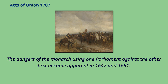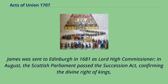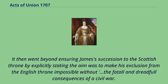The dangers of the monarch using one parliament against the other first became apparent in 1647 and 1651. It resurfaced during the 1679–1681 exclusion crisis, caused by English resistance to the Catholic James II succeeding his brother Charles. James was sent to Edinburgh in 1681 as Lord High Commissioner. In August, the Scottish Parliament passed the Succession Act, confirming the divine right of kings, the rights of the natural heir regardless of religion, the duty of all to swear allegiance to that king, and the independence of the Scottish crown.